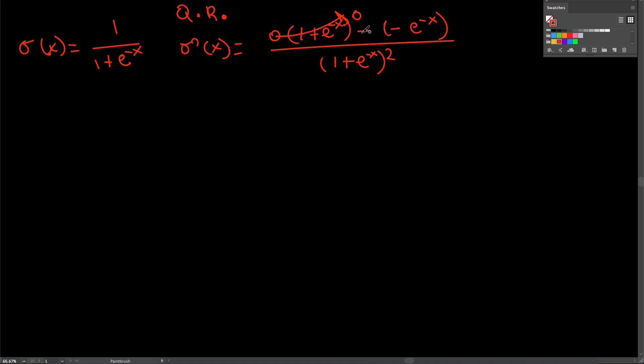And this we can say well minus times minus is plus so we'll just end up with e to the minus x over 1 plus e to the minus x squared.